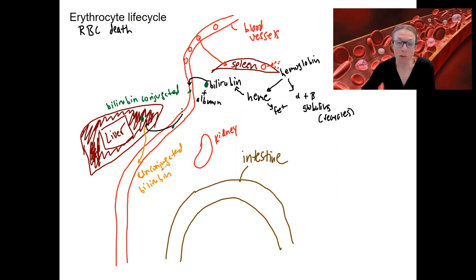So bilirubin is going to go out the body two different ways, mostly out the intestine. So it's going to become part of feces. Bilirubin excreted in feces. Some is also going to become part of the urine, and that's why your urine is yellow.